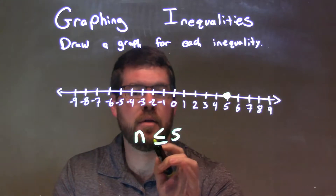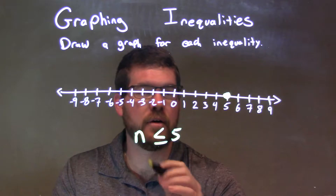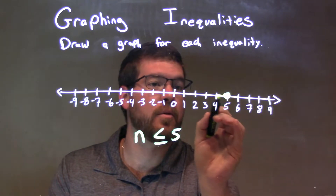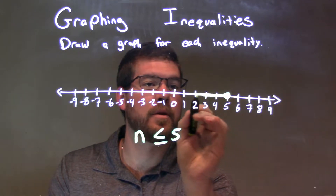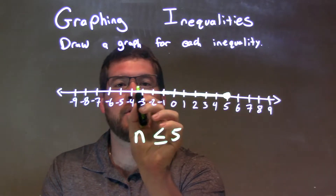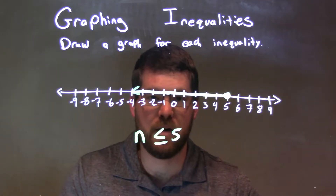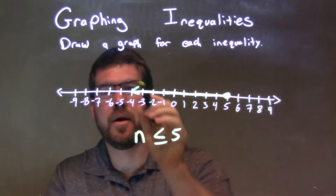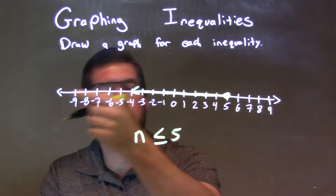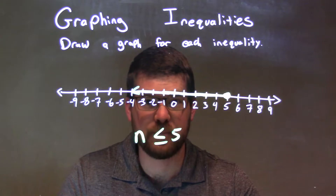The other key part: they say n is less than 5. Less than means we shade to the left. So we're shading here to the left. We don't need to go all the way, but we're shading that way. All of these are also included — that arrow shows it's including all those forever and ever to negative infinity.